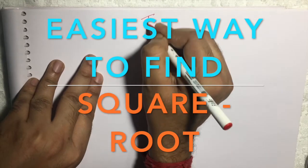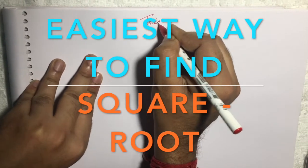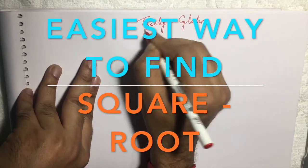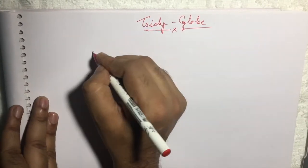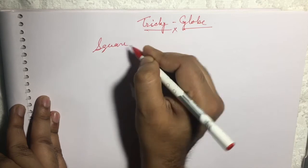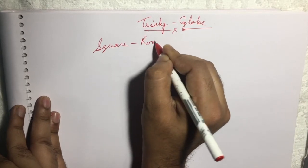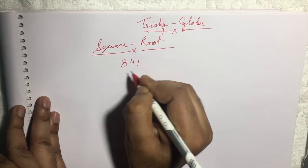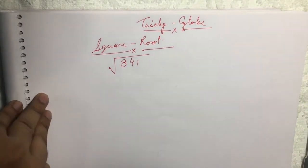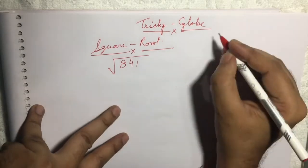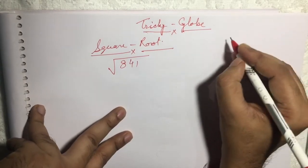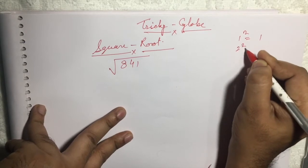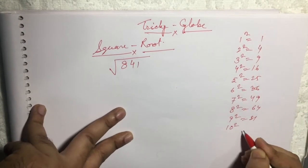Hi friends, welcome to Tricky Globe. Today we are going to learn about the shortcut method to find the square root. To find this, we need a table that is easy and that everyone knows — that is: 1 squared is 1, 2 squared is 4, 3 squared is 9... up to 10 squared is 100.